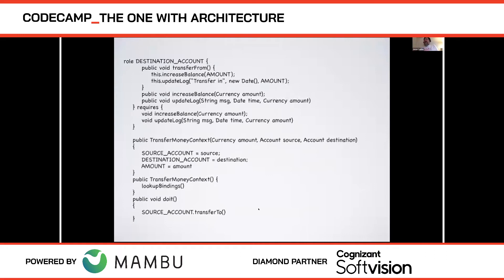Both business people and programmers are people — they both have mental models, and either can be a way of coming up with the roles. A good programmer thinks about things in terms of the customer vocabulary — that's what domain-driven design tries to give us. So let's say we want to do a money transfer in a bank. We'll have roles like the source account, the destination account, currency, and an amount. Here's a destination account with a method called transfer-from.